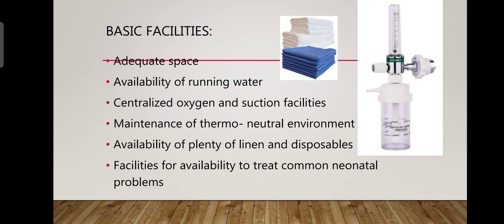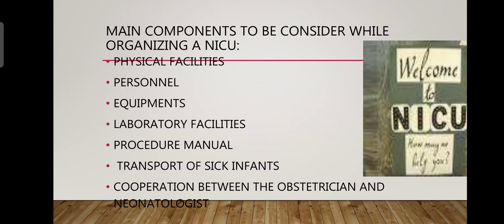Basic facilities of the NICU include adequate space, availability of running water, centralized oxygen and suction facilities, maintenance of a thermoneutral environment, availability of plenty of linen and disposables, and facilities to treat common neonatal problems. The main components to be considered while organizing an NICU are physical facility, staffing, equipment, laboratory, procedure manual, transport of sick infants, and cooperation between the obstetrician and neonatologist.